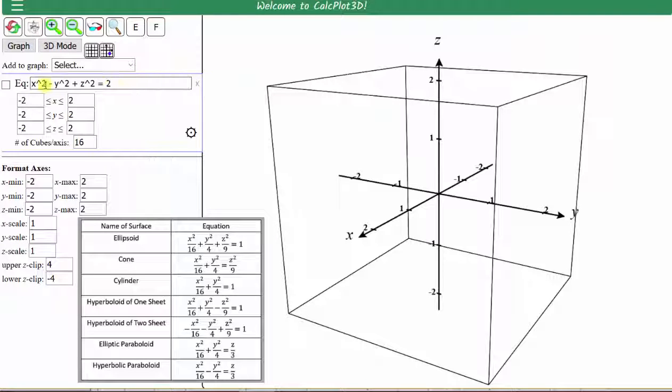And here's where we enter the implicit equation. So we'll go ahead and clear this. The equation of the ellipsoid is x to the second divided by 16 plus y to the second divided by 4 plus z to the second divided by 9 equals 1.